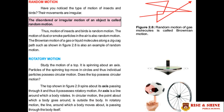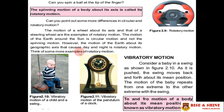The spinning motion of a body about its axis is called rotatory motion. For example, a steering wheel moves around its central axis. This is the key difference between circular and rotatory motion: in rotatory motion, the axis passes through the body itself.